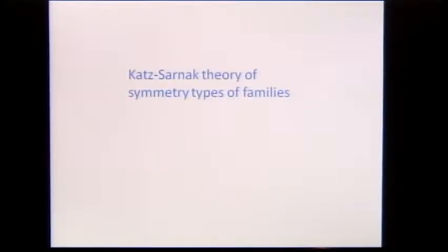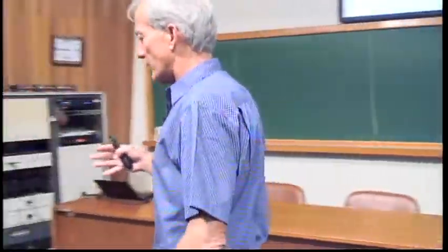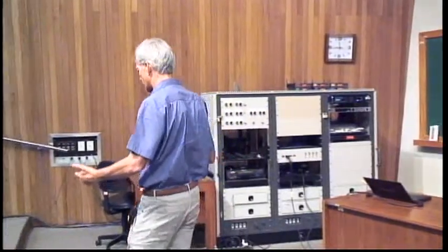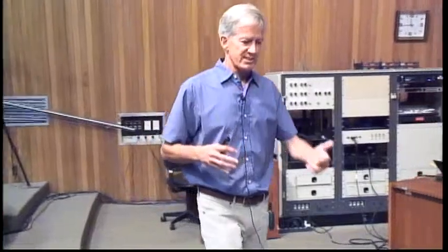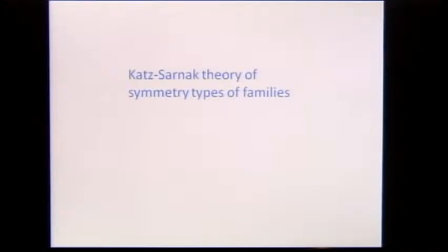These ensembles are different from the ones Michael Berry was showing — he had β = 1, 2, and 4 for different repulsions. But in number theory, the things that show up all have β = 2. CUE is the same, but the CSE and COE are different from the statistics you get from the special orthogonal group and the unitary symplectic groups, which all have quadratic repulsion.